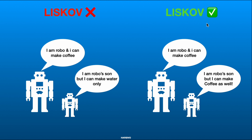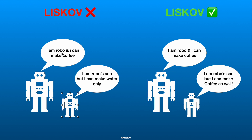To comply with the Liskov Substitution Principle, the mini robo — the son robo — should be able to make coffee as well. So the main robo makes coffee, but if the main robo is not available, the mini robo can make coffee too. This mini robo can replace the main robo. In the previous case, the mini robo that could only make water broke the Liskov Substitution Principle, whereas the mini robo that can make coffee and replace its parent robo class complies with the Liskov Substitution Principle.